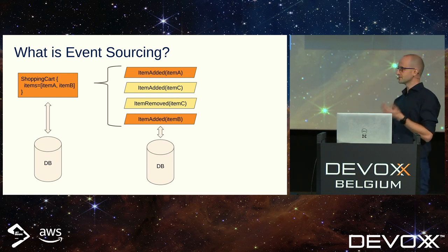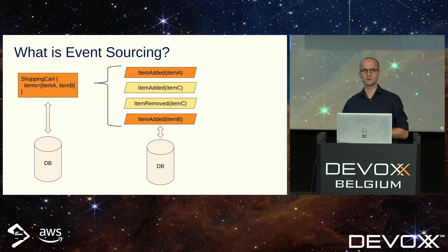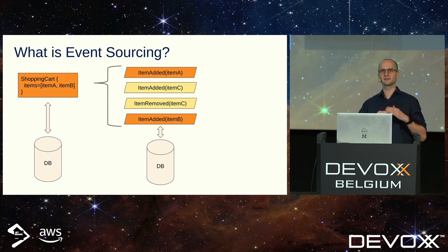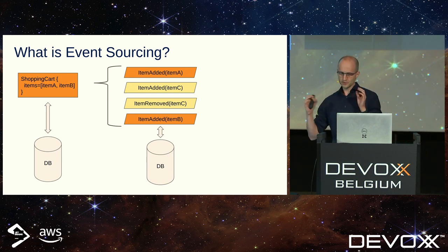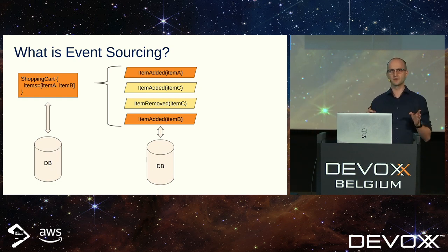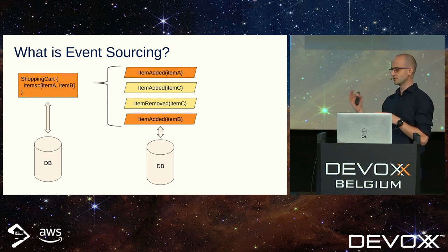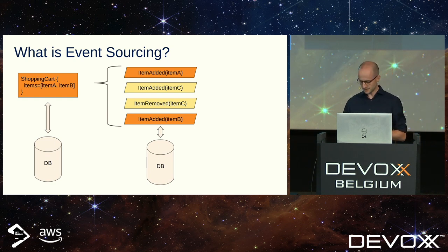That looks like pretty interesting business information. Maybe based on that fact we can send a voucher for this item to the user, or send a push notification with some replacement. Maybe this information is completely irrelevant for your business at this point. But what is crucial here is that you as a developer should not decide what business facts are important and what's not — you should store all of them and provide the necessary data when needed.